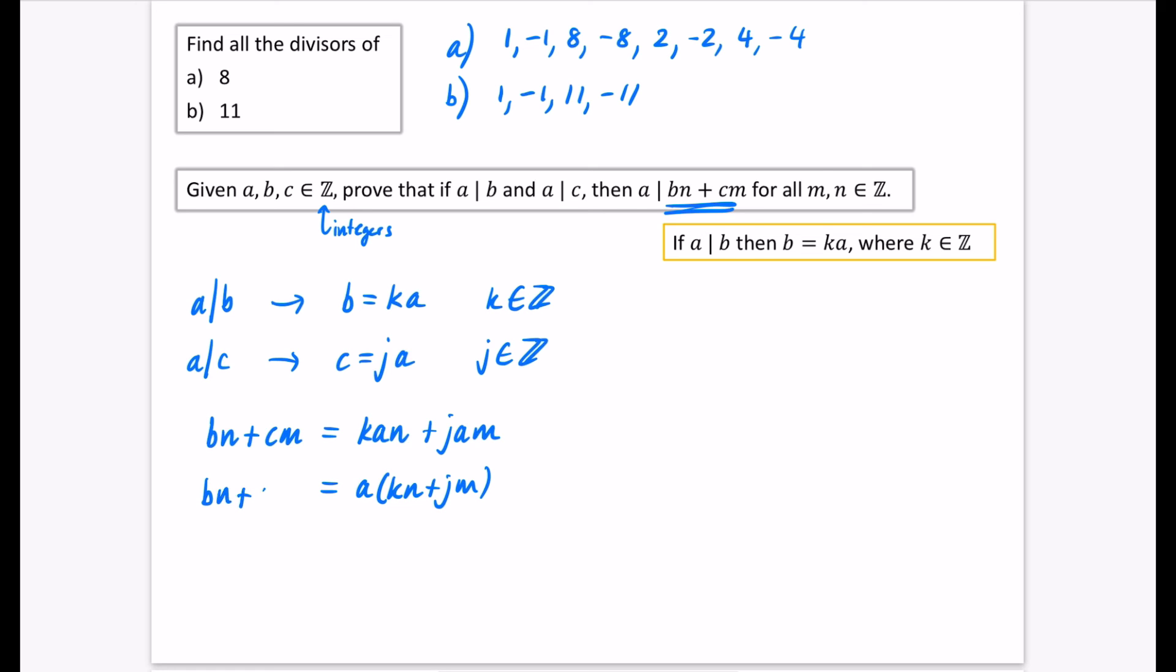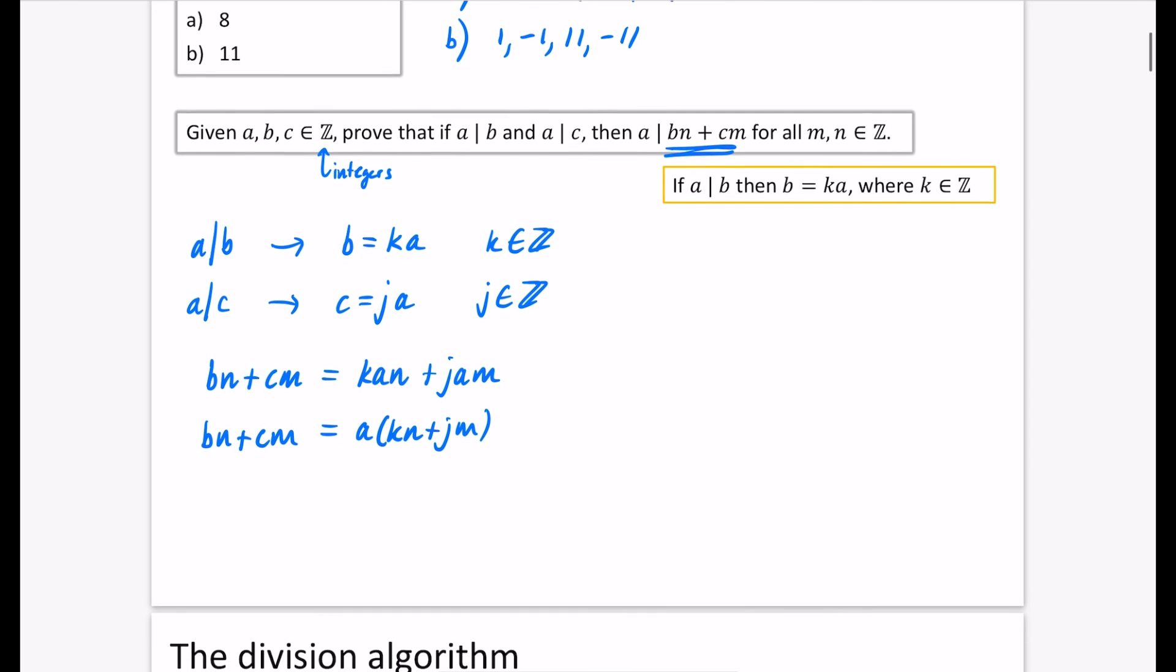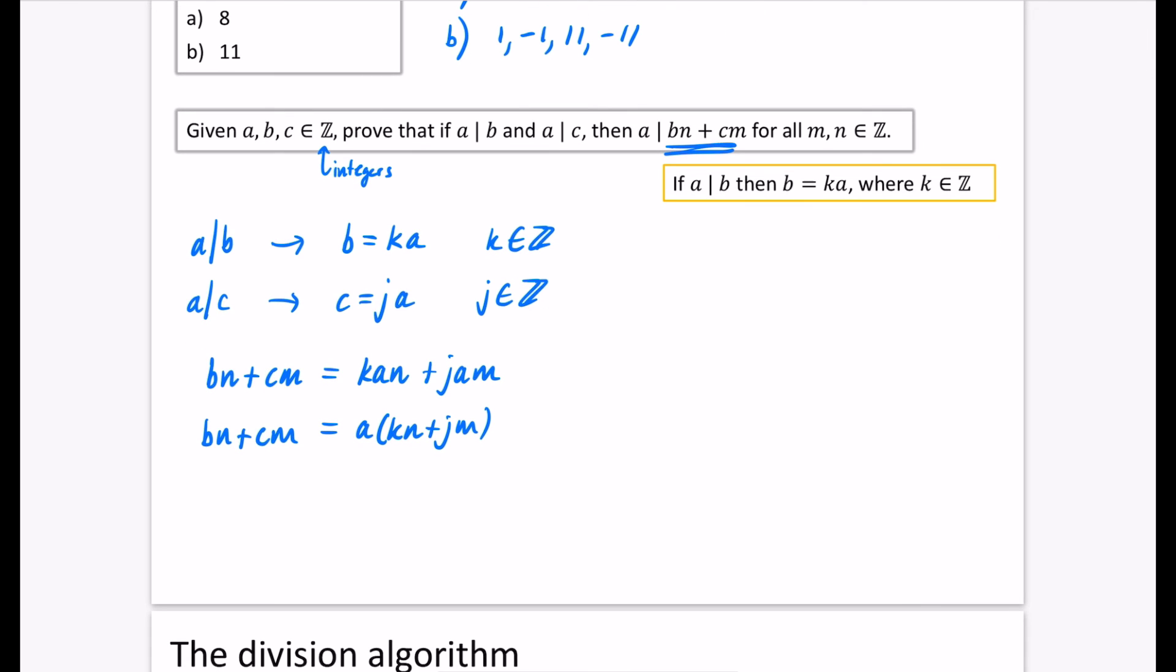And so what I can do is take a common factor out of these things, so that a, that is multiplied by kn + jm. So we've now got this statement that is written like this. Now this actually looks like this kind of thing that we've got here. If a divides b, then b is equal to ka, where k is an integer. So if we want this thing, a, to divide b, then we should be able to write it as a multiplied by some kind of integer that we've got here.